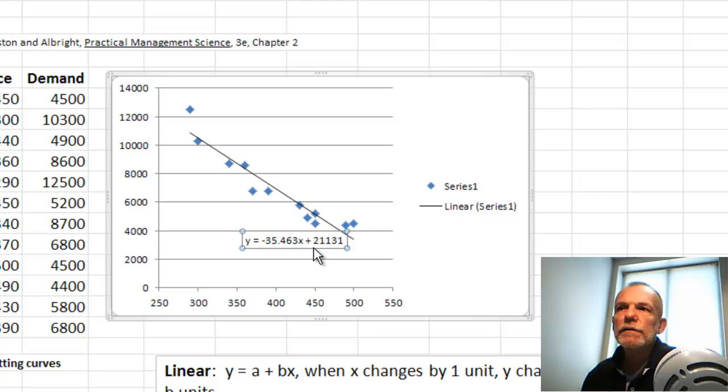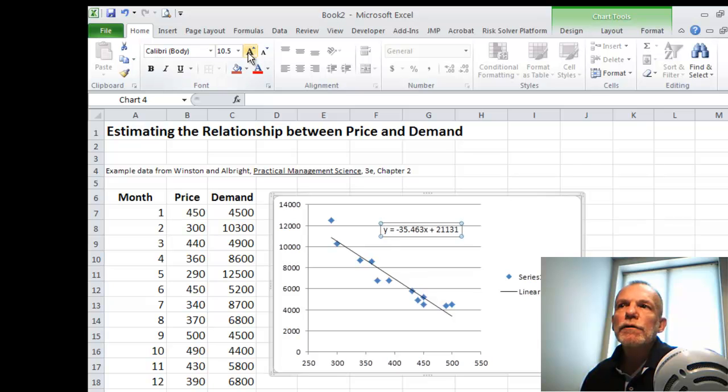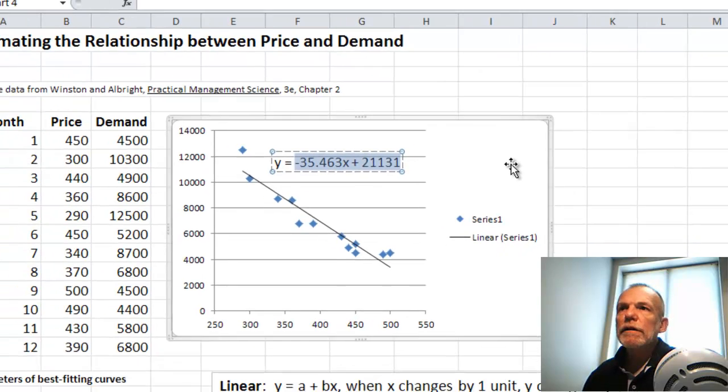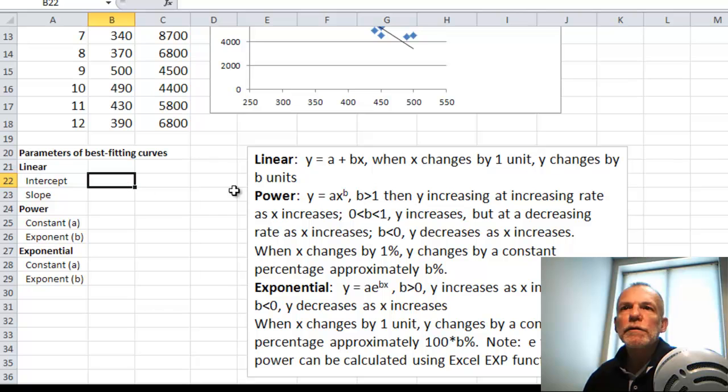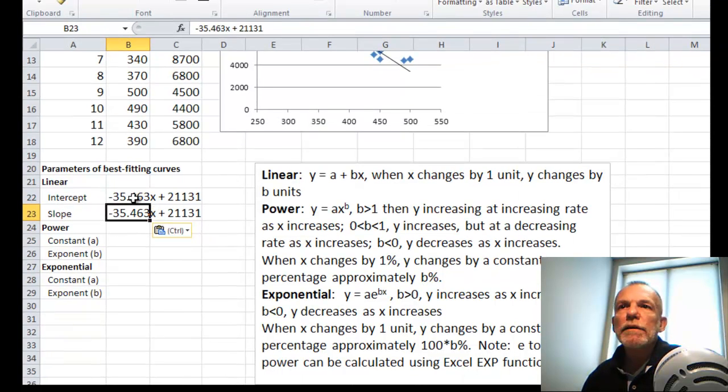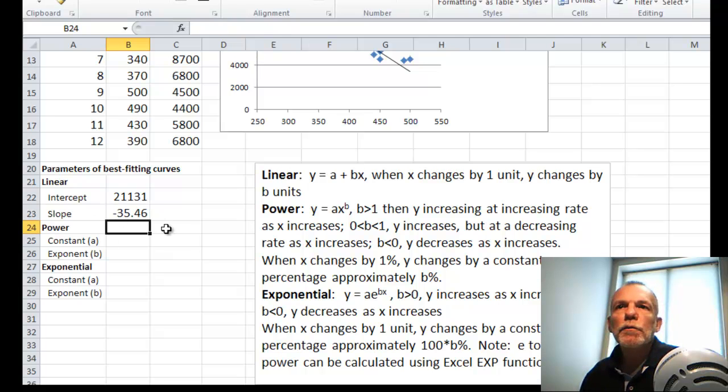And then we're left with that model. If we select that text box and go to the home ribbon, we can increase the font size of that. Okay, let's just copy and paste these coefficients down into our worksheet. I'm going to start by pasting in both places. And then we'll just delete what we don't need. So our intercept is 21,131. And our slope is minus 35.46.